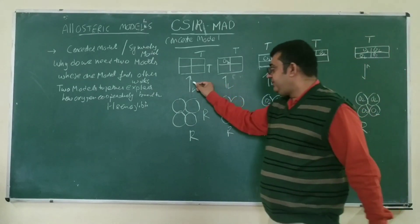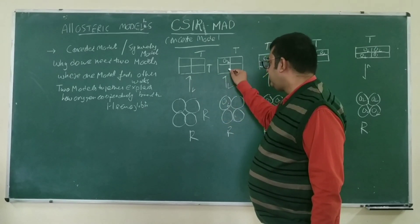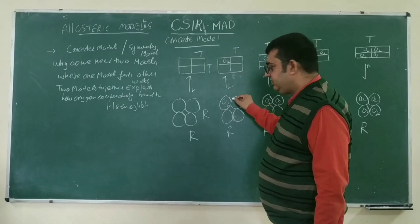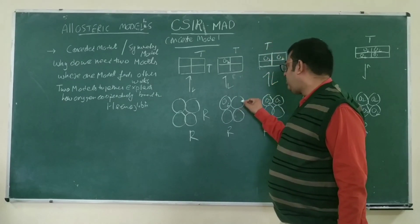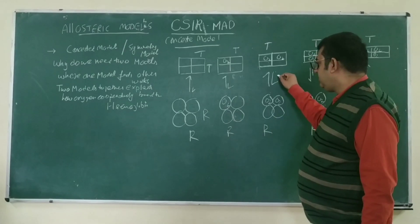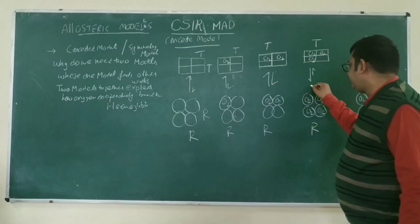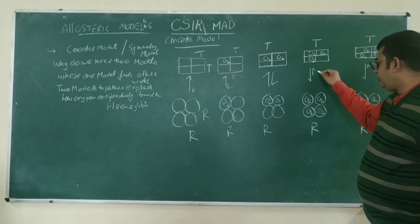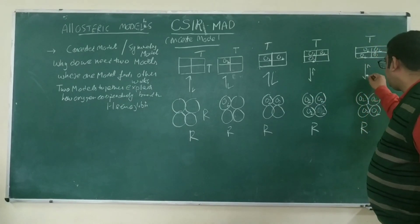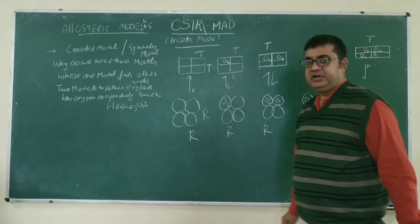Here the equilibrium lies more towards the T form, and when another oxygen binds, there is an equilibrium shift with little equilibrium towards the relaxed side. In the third condition, the equilibrium is equal in both directions. In this figure, the equilibrium is more towards the relaxed side, and here the equilibrium is more towards the tight side. This is the concerted model.